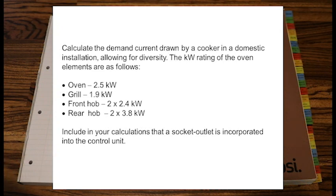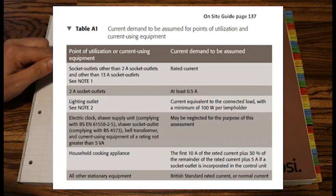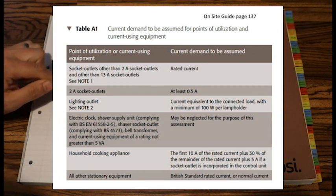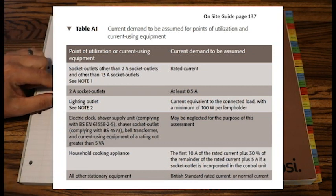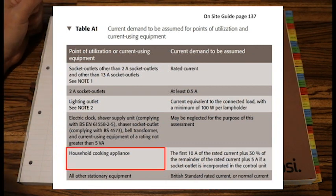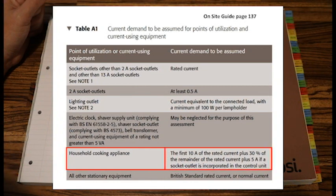So Table A1, if we look down, one, two, three, four, five. So fifth one down, it says household cooking appliance. And then on the second column, it says the first 10 amps of the rated current plus 30% of the rated current plus 5 amps if a socket outlet is incorporated into the control unit.